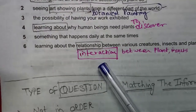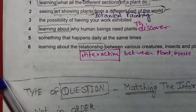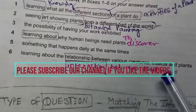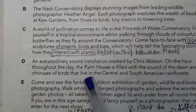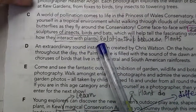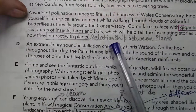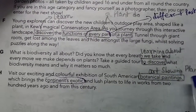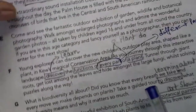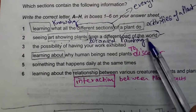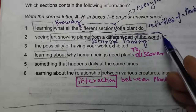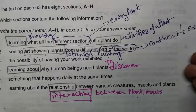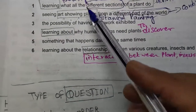I have taken these synonyms from the reading passage only. For 'relationship,' it is given in the paragraph as 'interaction between plants, insects and creatures.' So 'relationship between plants' is 'interact with plants.' And 'to discover' is 'learning about.' 'Botanical paintings' is 'art showing plants.' Also, 'different part of the world' — the writer has used the word 'continents' and also 'exotic.'